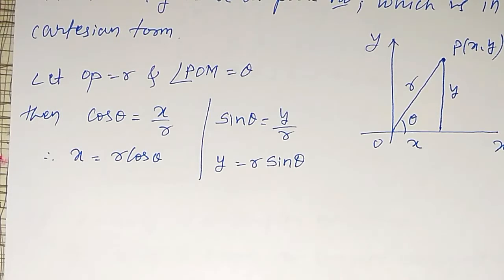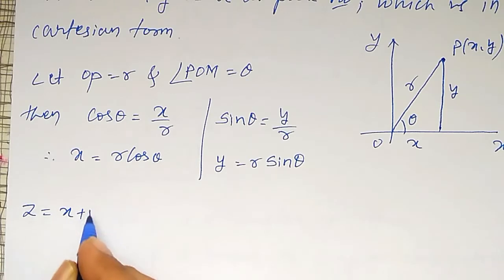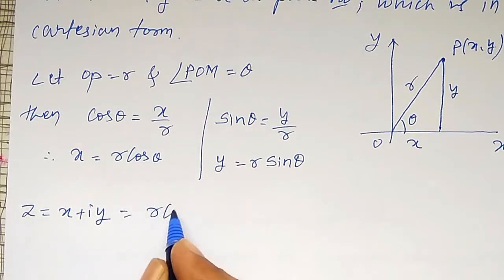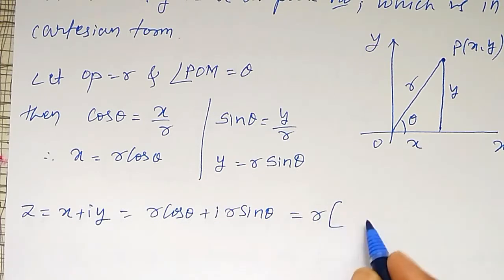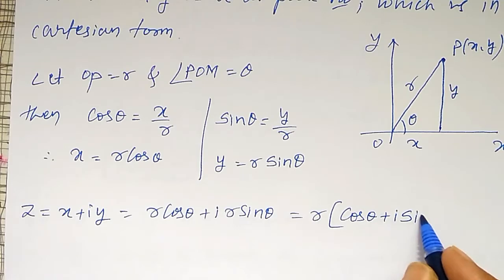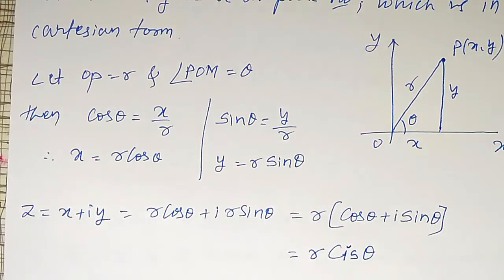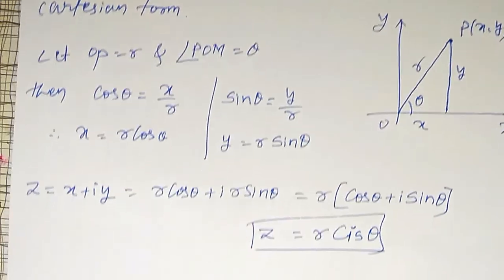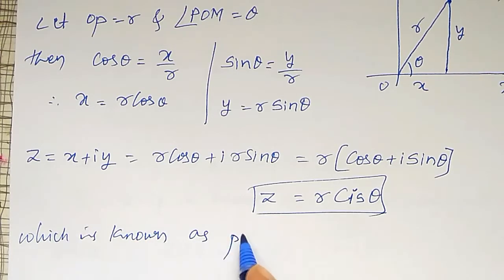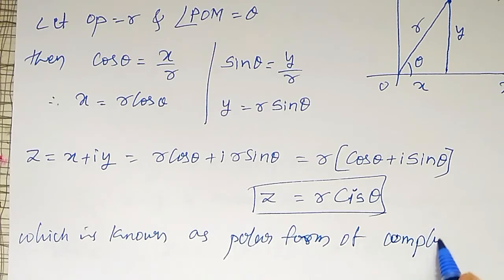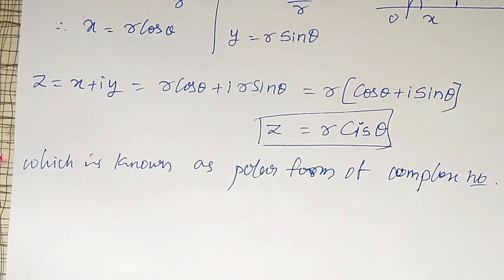From these two, z is equal to x plus iy, that is x equal to r cos theta, plus i into y as r sin theta. Or, r into cos theta plus i sin theta. Or, shortly, we write it as r cis theta, which is known as the polar form of a complex number.